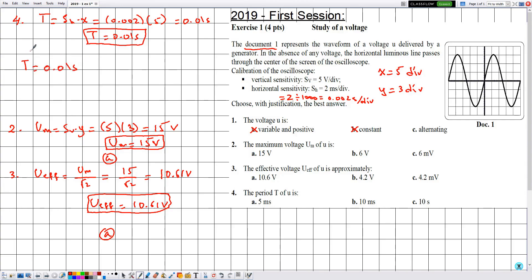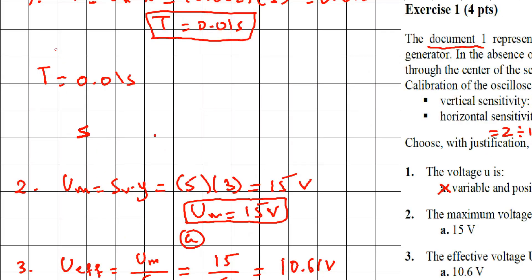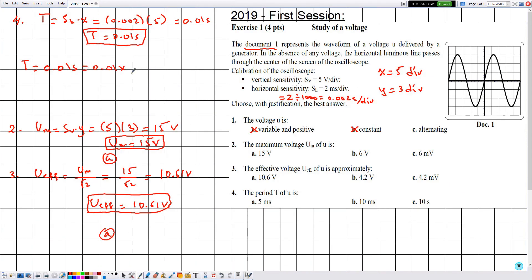The period is 0.01 seconds. To convert from seconds to milliseconds, we multiply by 1000. Then 0.01 multiplied by 1000, and the period is 10 milliseconds. Now we can see the correct answer is b.